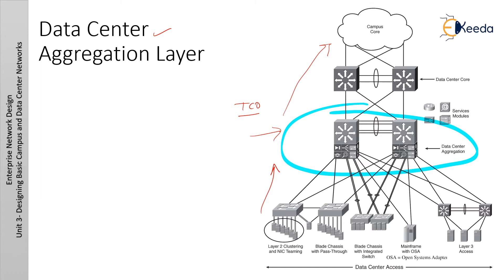Although Layer 2 at the aggregation or distribution layer is tolerated for legacy design, new designs should have Layer 2 only at the data center access layer. With Layer 2 at the data center aggregation layer, physical loops in the topology would have to be managed by STP (Spanning Tree Protocol). In this case, RPVST+ is recommended as best practice to ensure a logically loop-free topology over the physical topology.